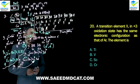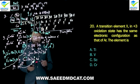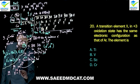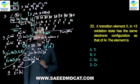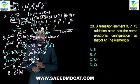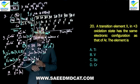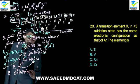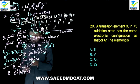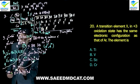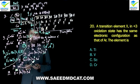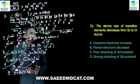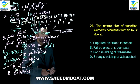Question 20: A transition element X in +3 oxidation state has the same electronic configuration as argon. What is the element? When it is in +3 state, it has released 3 electrons; if one electron remains, it goes into 3d1. So the original configuration (without charge) would be [Ar] 4s2 3d1 — that is scandium. Charlie option: scandium.